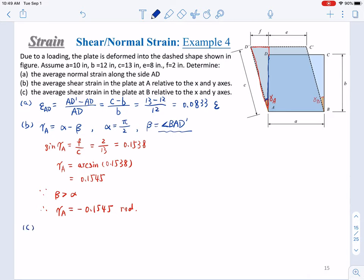Okay, then the last step, the average shear strain in plate at point B. Do we need to do another calculation? You just need to do a simple calculation. Just look at here, A equals 10. And on the other side, F is 2 and E is 8. When you add F and E together, you get 10 too.